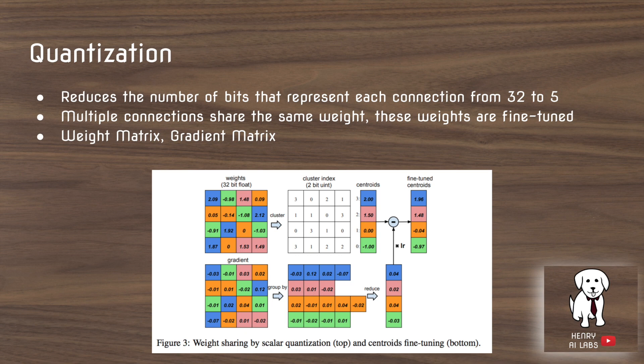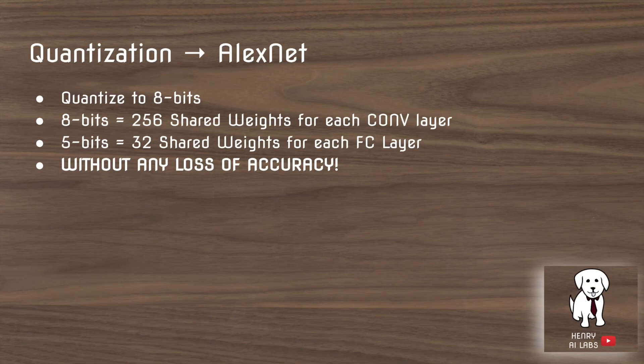The initial centroids are derived after the full training and then they're fine-tuned after they're quantized. In quantizing AlexNet they use 8 bits for the convolutional layers and 5 bits for the fully connected layers.